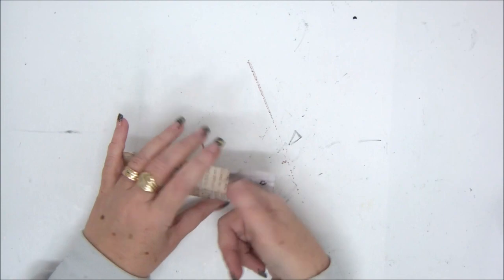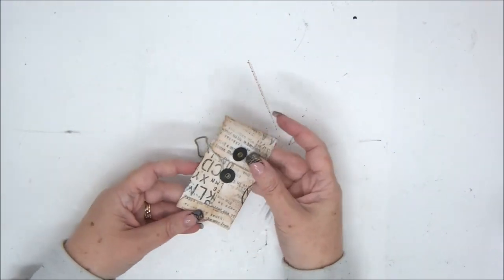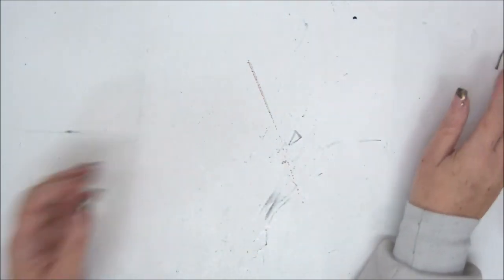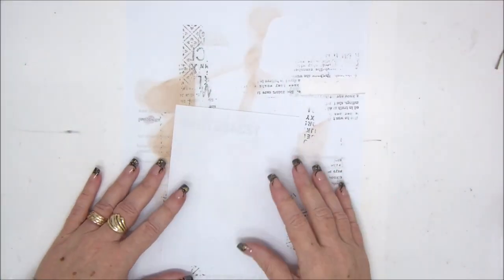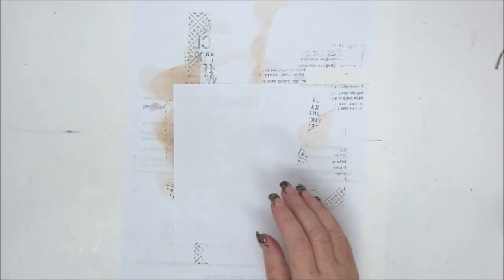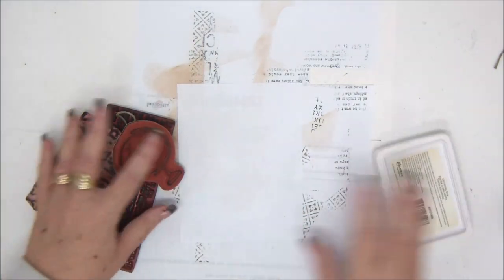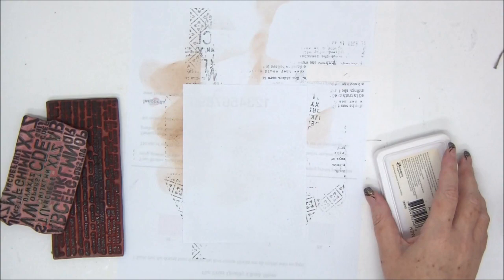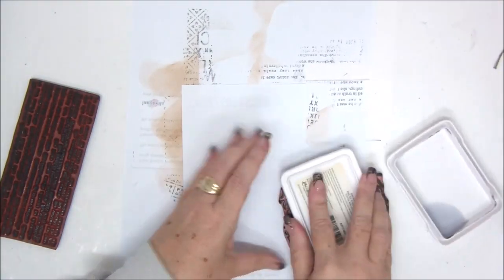I have given it a vintage look, but it will be up to you what type of look you want to have for your coin envelope. So what you will need is a five and a half by four and a quarter piece of cardstock or paper, and I'm going to add stamps to it.